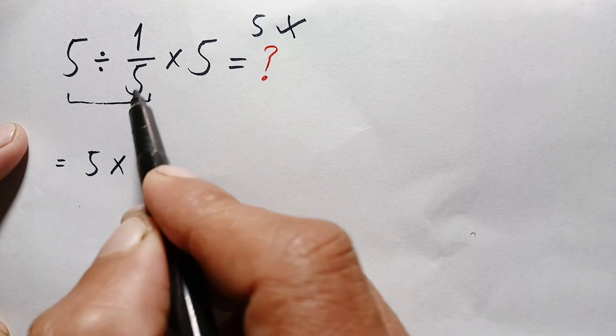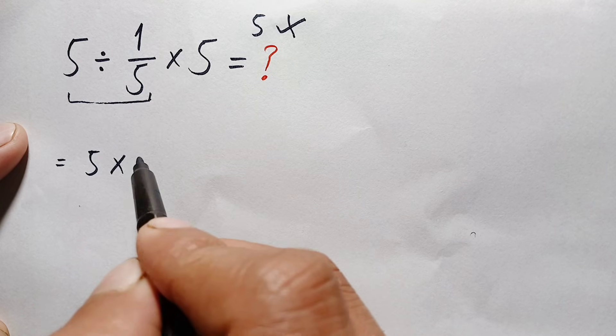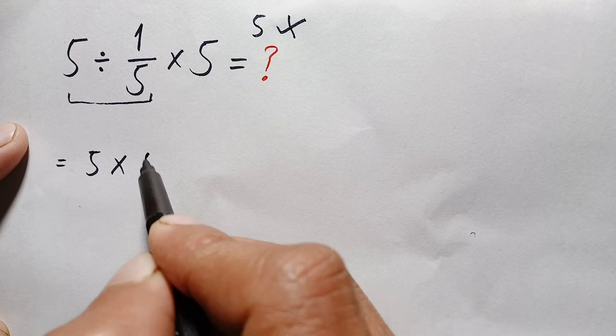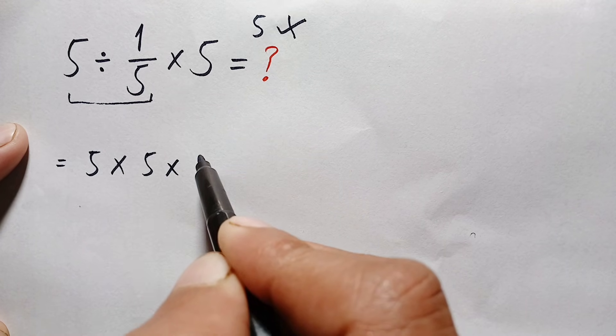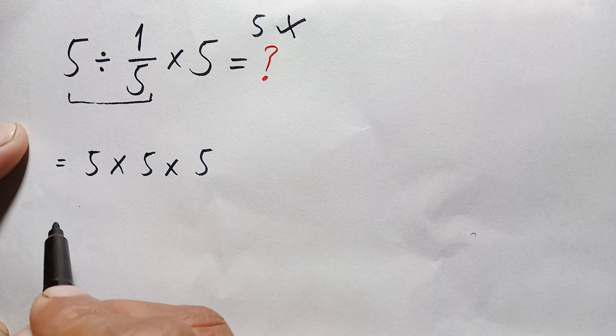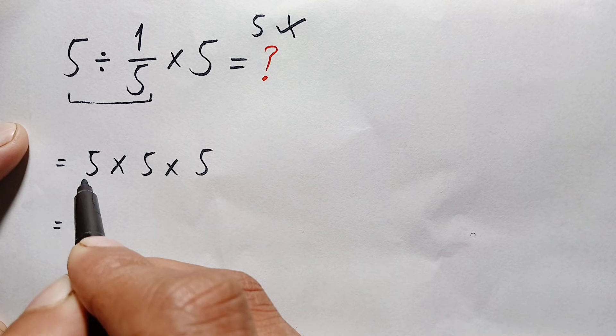and take the reciprocal of this fraction, which is 5/1 or simply 5. So we have 5 times 5. Now we have the same operation, so let's do these operations from left to right.